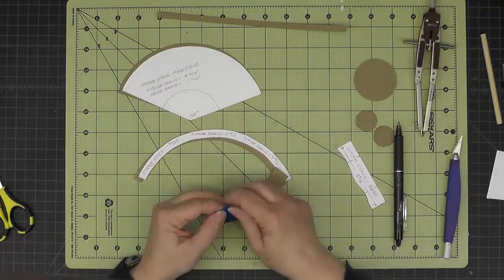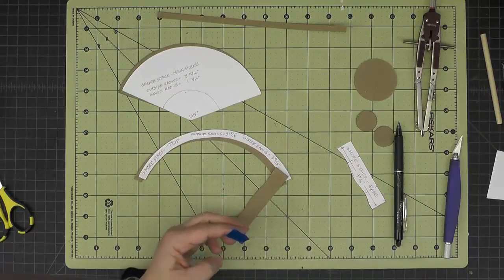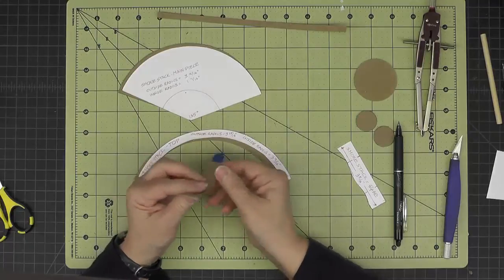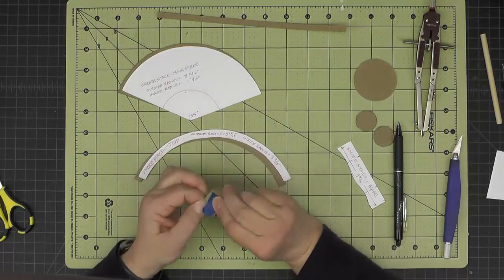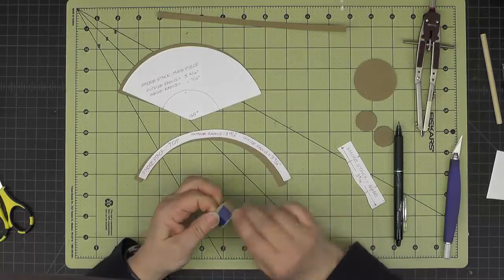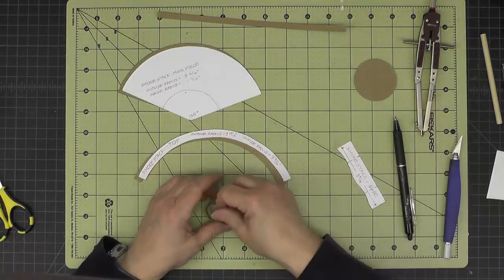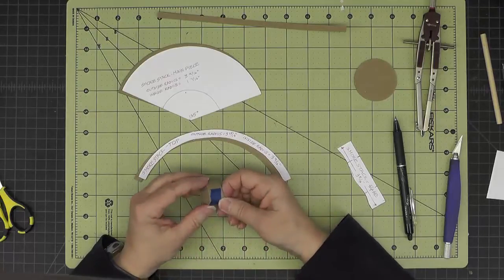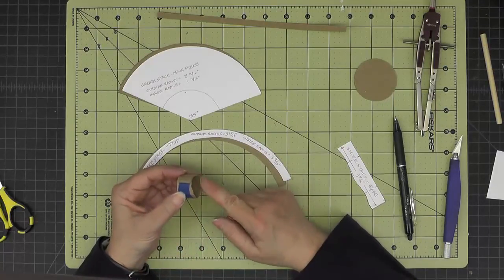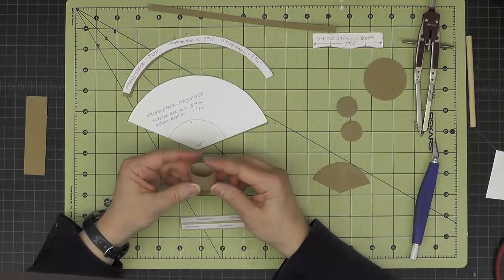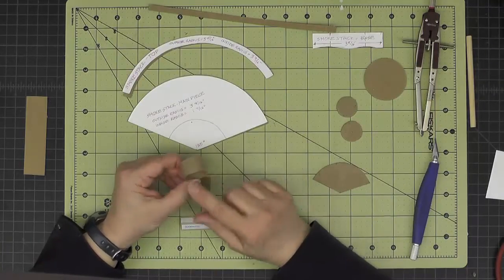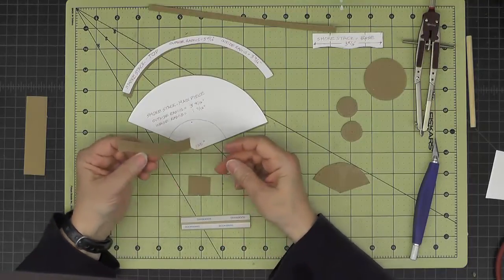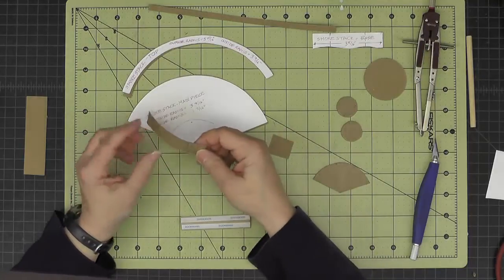And join it together with some temporary tape here. Then I can drop in my two one-inch circles, and then just take this over to the locomotive and check my curves like we've done before. So my test for the shape on the bottom of the base here was successful.